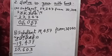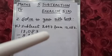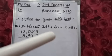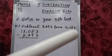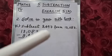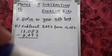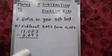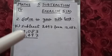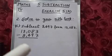Now question number C. Question C is subtract 8,497 from 12,083. So we have to subtract 8,497 from 12,083. I will write 12,083 on top and 8,497 downwards.